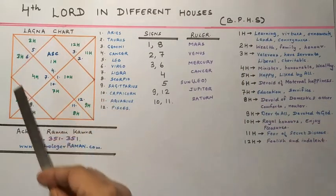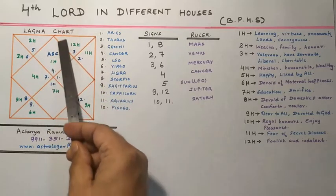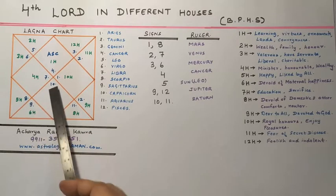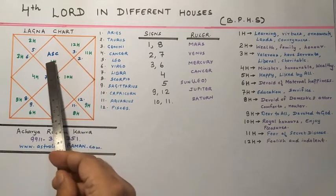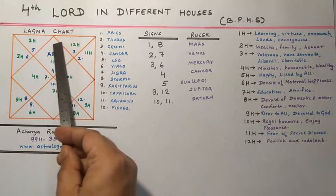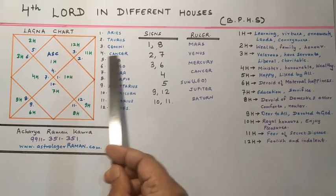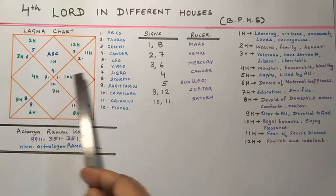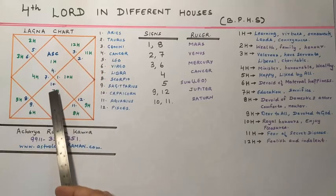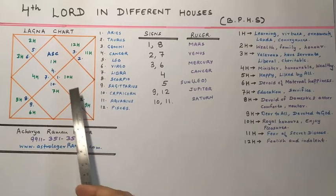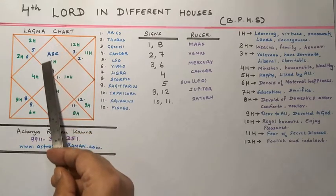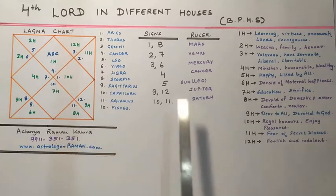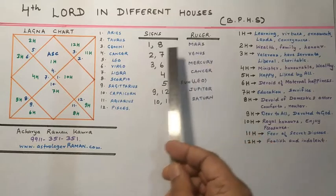As you can see the Lagna chart or main birth chart here, the first house always remains where ascendant is written. The number written here can change because these are Rashis or signs, but the first house always remains where ascendant is written. Here 4 stands for Cancer, 5 for Leo, 6 for Virgo, 7 for Libra, then Scorpio, Sagittarius, Capricorn, Aquarius, Pisces and so on. But the first house always remains where ascendant is written. You can also see the signs and rulers of the houses given here.